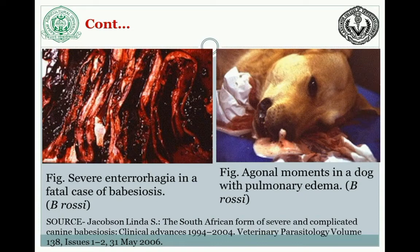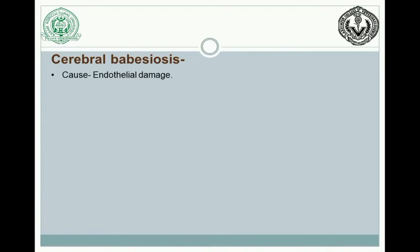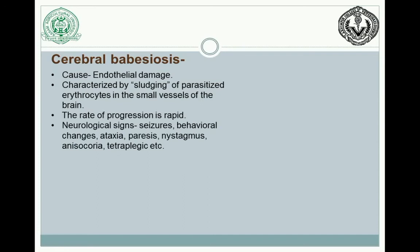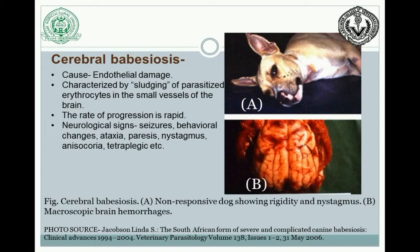Coming to cerebral babesiosis, the cause is mainly endothelial damage and sludging of parasitized erythrocytes in the small vessels of the brain. The rate of progression is very rapid. Neurological signs include seizures, behavioral changes, ataxia, paresis, nystagmus, isochorea, tetraplegia, etc. Picture A shows a non-responsive dog showing rigidity and nystagmus, and picture B shows a microscopic lesion revealing brain hemorrhages.